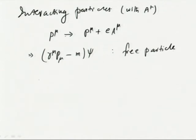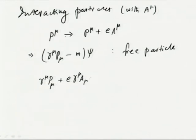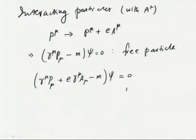That is changed to (γ^μ P_μ plus e γ^μ A_μ minus m) ψ equal to zero for interacting particles.